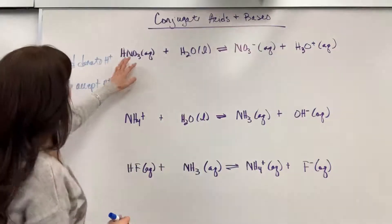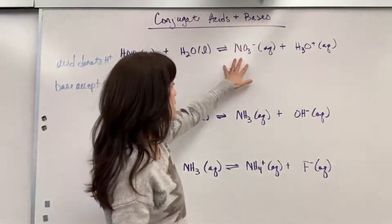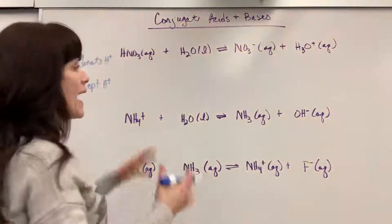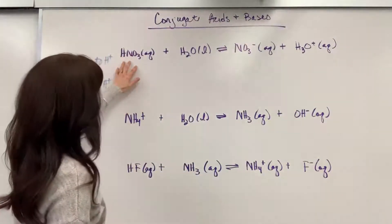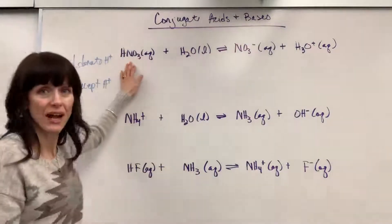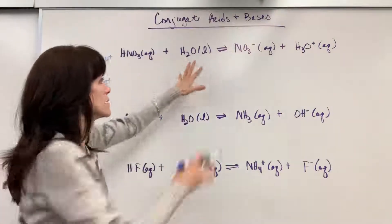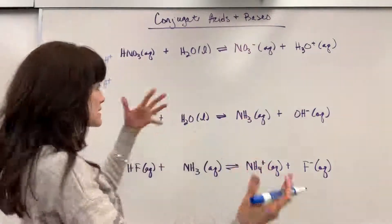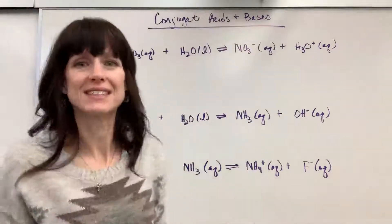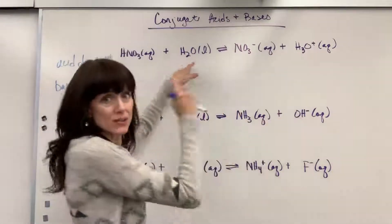Let's take a look here. I have nitric acid — notice that hydrogen, HNO3 — and then water, H2O, in equilibrium with NO3 minus (the nitrate ion) and the hydronium ion, H3O+. I'm looking at hydrogens. Comparing relative species: there's my nitric acid and here's my nitrate. What's the difference? Nitrate doesn't have a hydrogen. So the nitric acid is going to donate a hydrogen — it loses that hydrogen. Now look at water and hydronium: H2O versus H3O+. Hydronium has one more hydrogen, so water is going to accept a hydrogen.